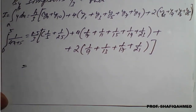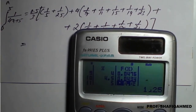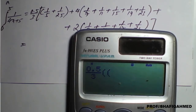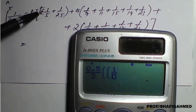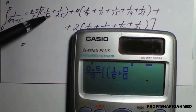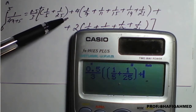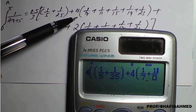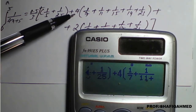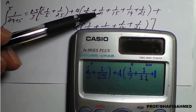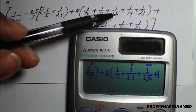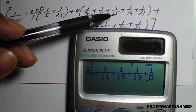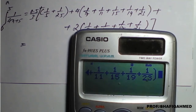So 0.5 upon 3 — fraction values: 0.5 divided by 3 — then brackets. Here you can see: 1 divided by 5, plus 1 divided by 25. Next, plus 4 times bracket: 1 divided by 7, plus 1 divided by 11, plus 1 divided by 15, plus 1 divided by 19, plus 1 divided by 23. Close the bracket.